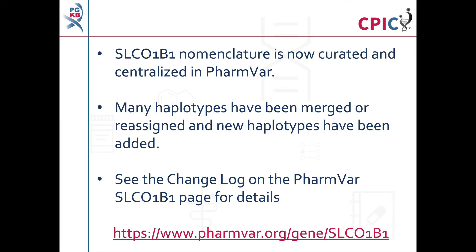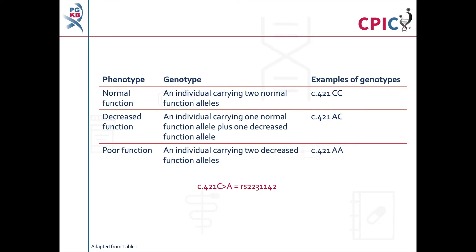The SLC01B1 page on PharmVar contains a change log with further details. This guideline also assigns ABCG2 phenotypes for patients based on their genotype at RS2231142, also known as the 421C>A SNP. This information is also shown in Table 1 of the guideline. Gene information tables for ABCG2 are also available on the PharmGKB website, with a link given in the description below this video.